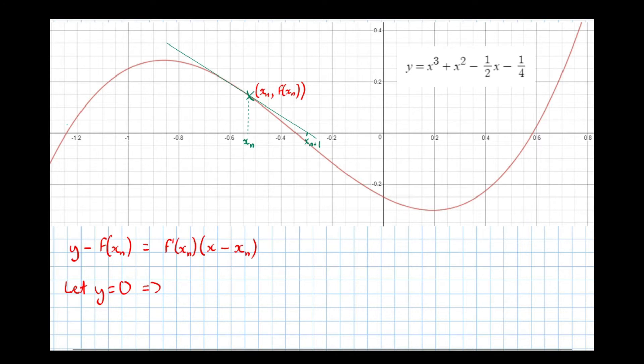We get 0 minus f of xn equals f dash xn. And now, the x coordinate we know is x of n plus 1 minus xn. We're trying to find out what this x of n plus 1 is.